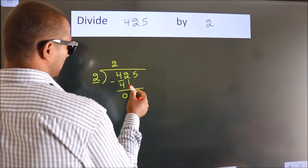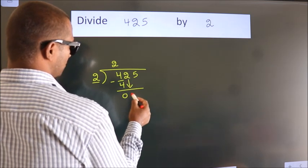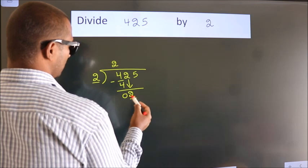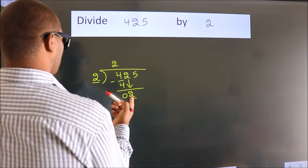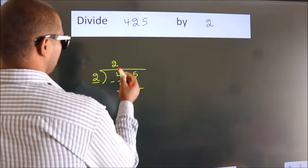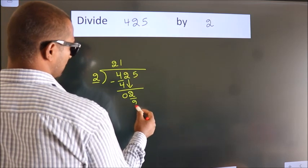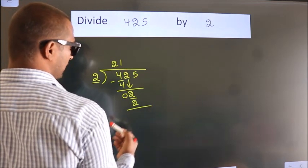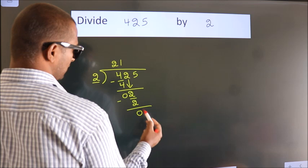After this, bring down the beside number. So 2 down, so 2. When do we get 2? In 2 table, 2 1s, 2. Now we subtract, we get 0.